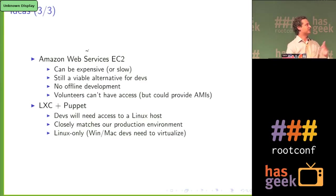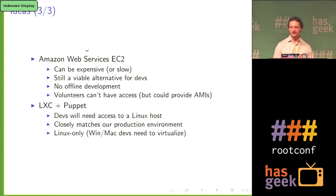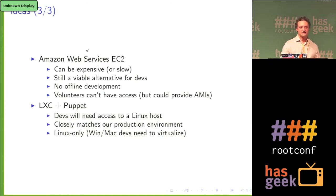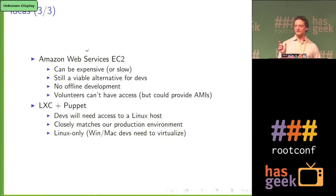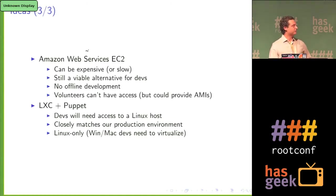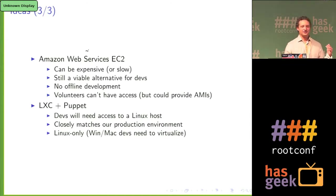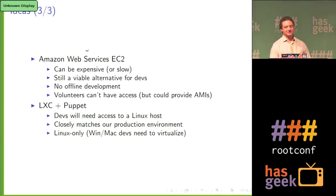The last couple of ideas were EC2. You can spend a bunch of money and get really fast VMs, or spend a little money and get slower VMs. Developers are very comfortable doing this — you can go to aws.amazon.com, click around, and make yourself a VM. If you have an image that matches production, this is really easy for developers to bring up. The problem is that you can't do offline development, and you have to create another system for your volunteers to get these images and install them on their own AWS accounts — which they might not have money for, or it might not even be legal in their country.